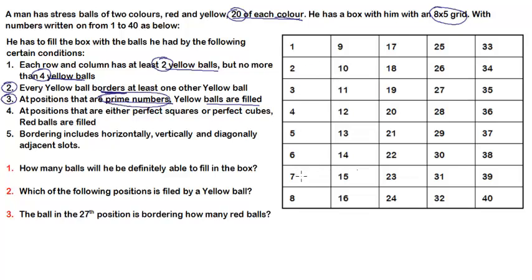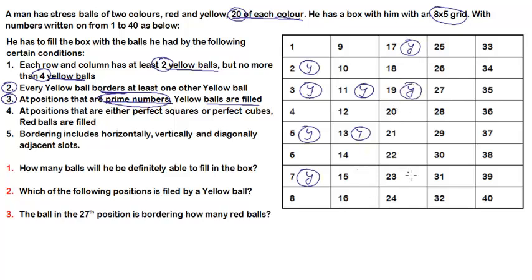If we count the prime numbers from 1 to 40, the yellow balls go at: 2, 3, 5, 7 in the first column; 11, 13 in the second column; 17, 19, 23 in the third column; 29, 31 in the fourth column; and 37 in the fifth column. So condition 3 is done.